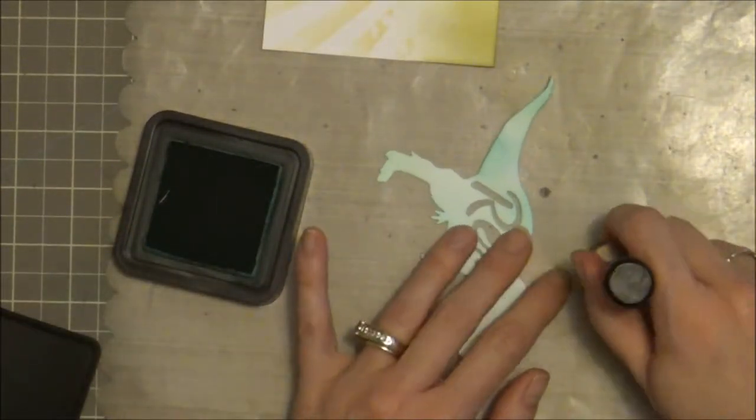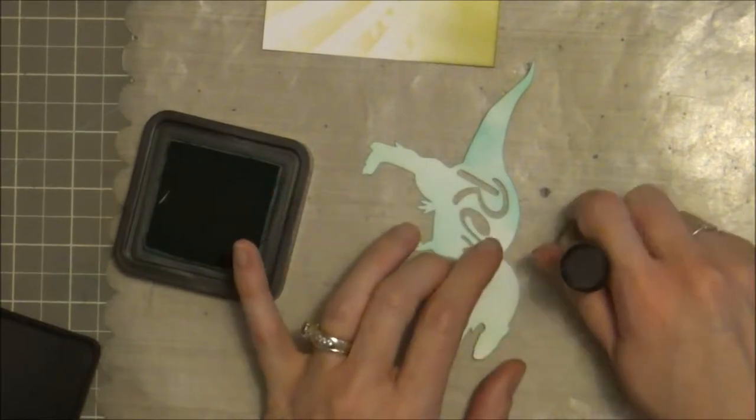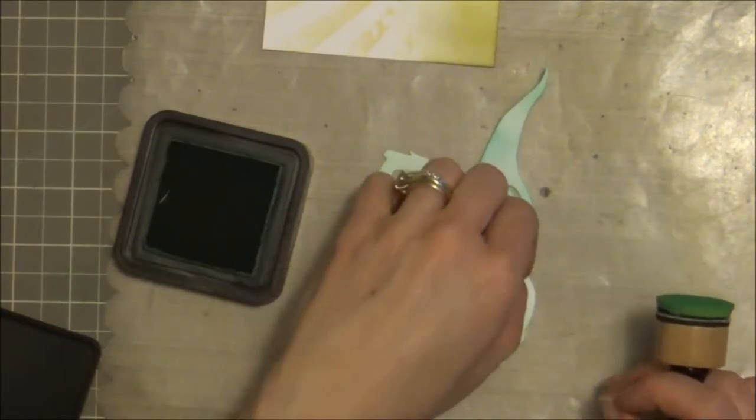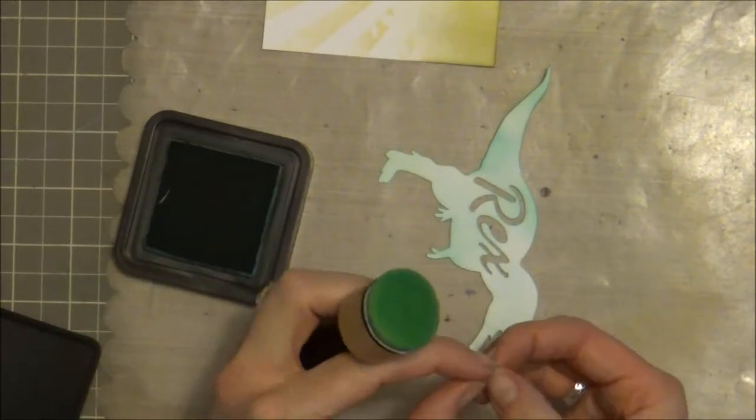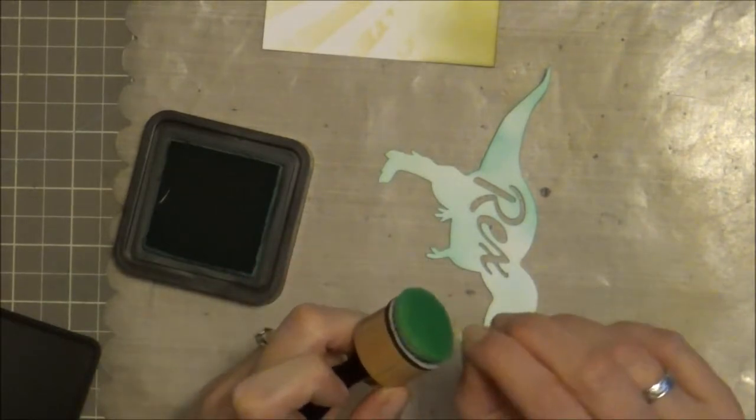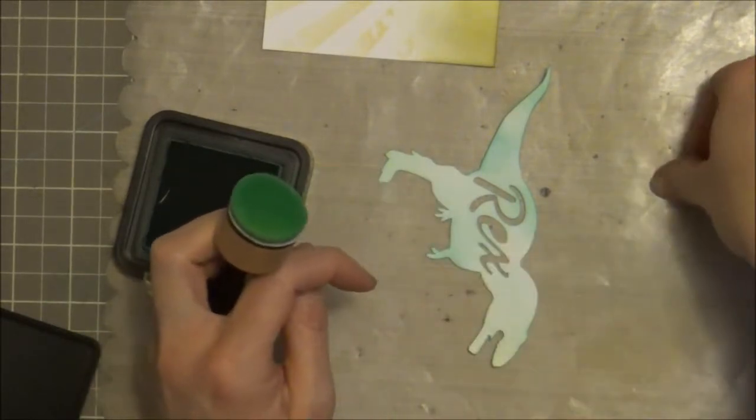And if you don't like working with the ink tools, you can absolutely cut this out of a colored cardstock. And now my word Rex, you can see right there I'm just inking the little centerpiece to the E so that it mostly matches the T-Rex body color.